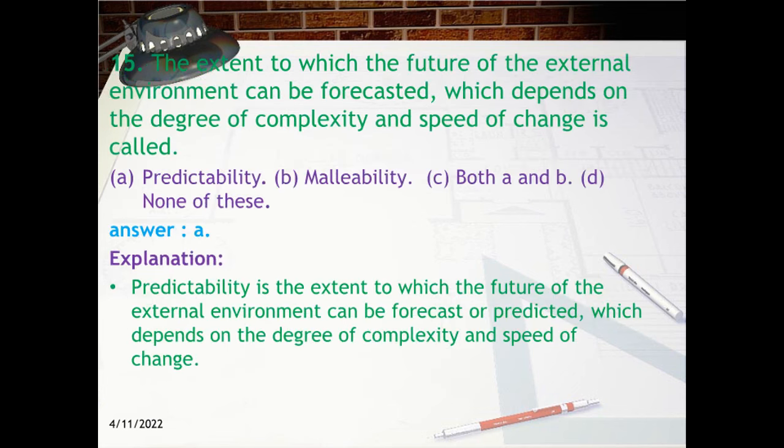Question 15: The extent to which the future of the external environment can be forecasted, which depends on the degree of complexity and speed of change, is called — A. Predictability, B. Malleability, C. Both A and B, D. None of these. Answer: A. Predictability.